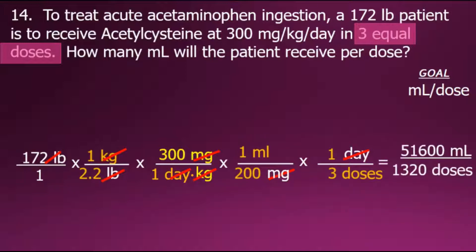We're left with the multiplication of these fractions to form a new fraction. Simplifying, the last step is to divide the numerator by the denominator, giving us a final value of 39.1 milliliters per dose.